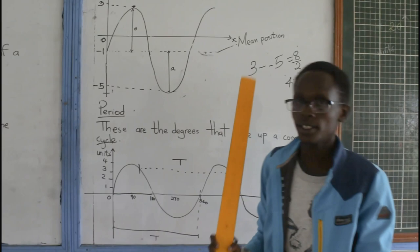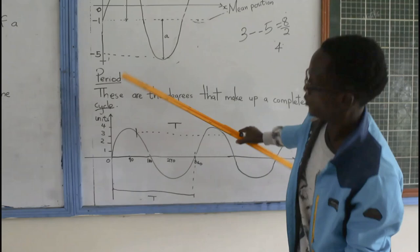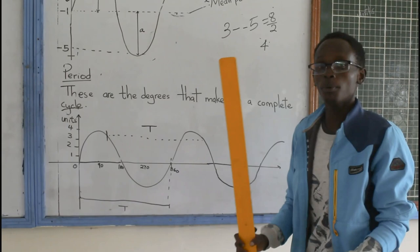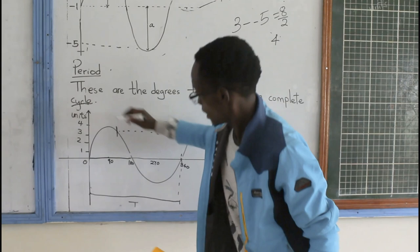Then, we're going to cover the next thing. A period. What is a period? A period, these are the degrees that make up a complete cycle. What is a cycle? A cycle is a crest and a trough.